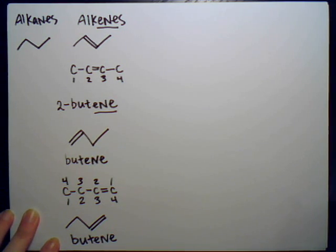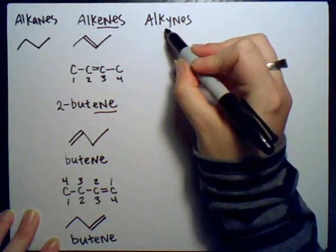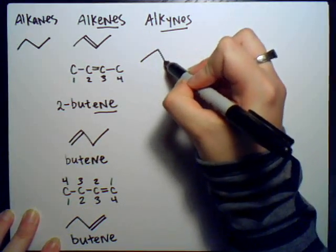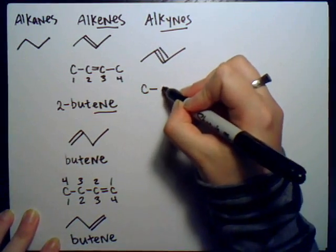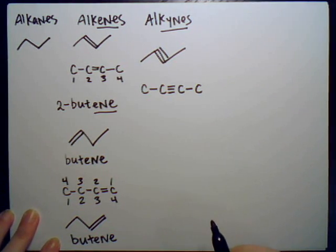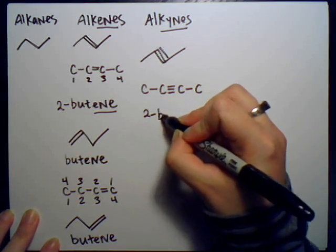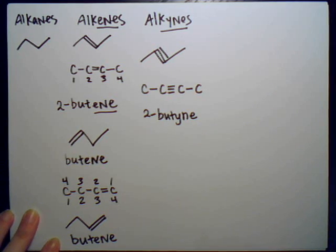For triple bonds, the ending is '-yne,' giving us alkynes. It works in the same fashion as double bonds — a triple bond drawn like that, and since it occurs on carbon two, it would be called '2-butyne.'